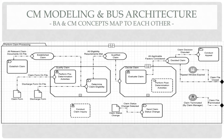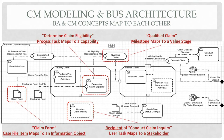Here's an example of a CMMN model I created based on my work at the VA, where I did some BPMN modeling. You have a claim management construct here for case management. I can make the assertion that 'qualified claim' as a milestone is essentially the outcome of the 'qualified claim' stage and maps to some kind of value stage in a value stream. A claim form as a case file item will map to some kind of information object within the organization's information model, and so on.